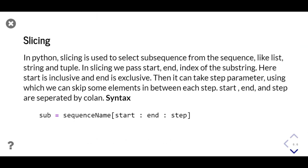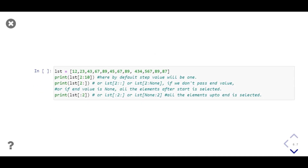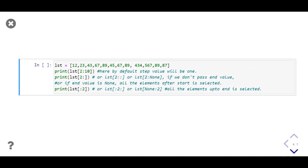In Python, slicing is used to select a sub-sequence. In slicing we pass a start and end index of the substring — start is inclusive and end is exclusive. We can also pass a step parameter to decide how many elements to skip between selections. For slicing, you pass start, end, and step values in square brackets separated by colons. In this example we store a list of integers in variable `lst`.